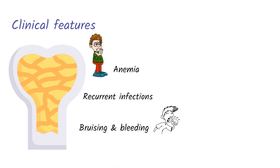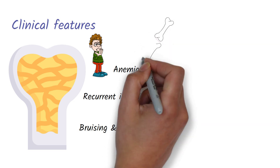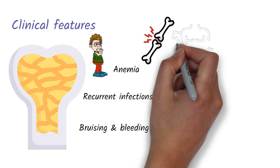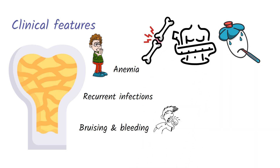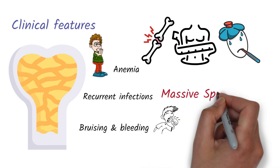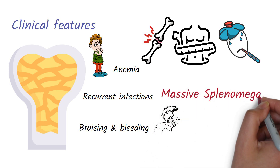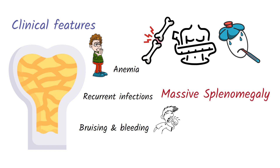Other than these features, patients with myelofibrosis will also present with bone pain, gout, weight loss, night sweats, and fever. And also, because of the extramedullary hematopoiesis, these patients will have splenomegaly. Myelofibrosis is one of the causes of massive splenomegaly.